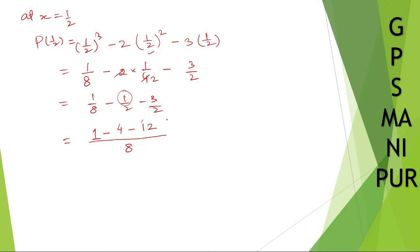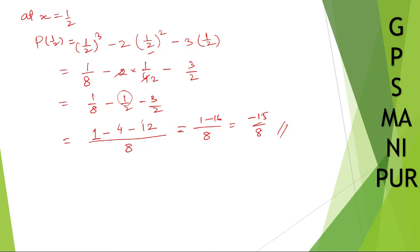I hope you understand how to do this. If you don't understand, please write down in the comment below — I will help you. So minus 4 minus 12 will be minus 16. Plus 1 minus 16 by 8, it will be minus 15 by 8. Minus 15 by 8. I hope the answer is correct. Thank you so much. We will meet in the next video.